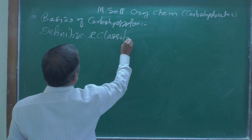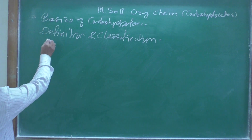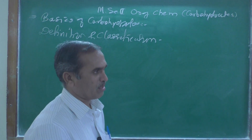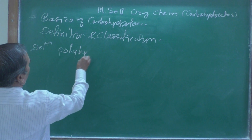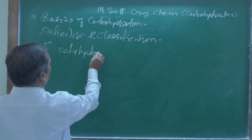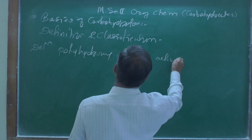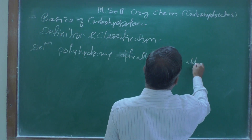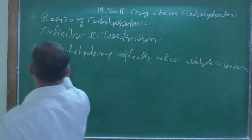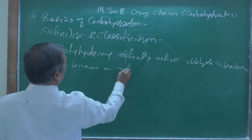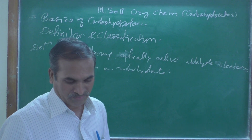The formal definition: carbohydrates are polyhydroxy, optically active aldehydes or ketones, known as carbohydrates. This is the simplest and most complete definition of carbohydrates.